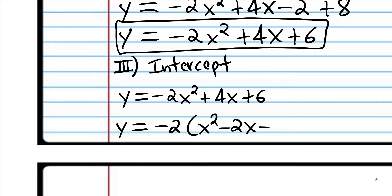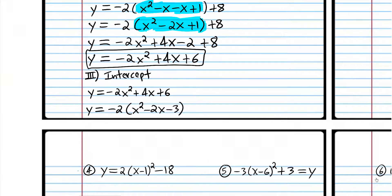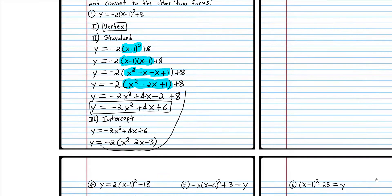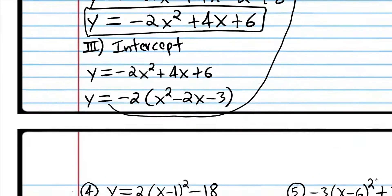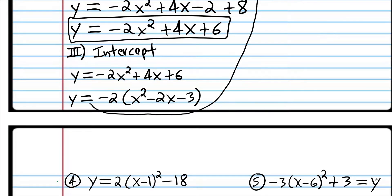A lot of students don't like factoring, but factoring is something you did in my beginning algebra course. Why does factoring work? Because if we use the distributive property to multiply back, we get negative 2 times x squared is negative 2x squared, negative 2 times negative 2x is positive 4x, and negative 2 times negative 3 is positive 6. So it's just the opposite of the distribution rule.